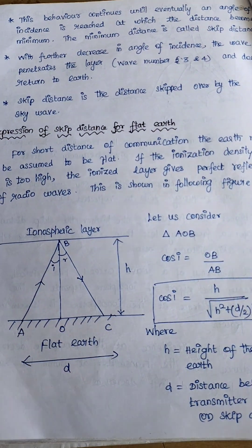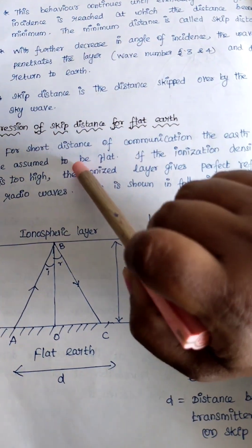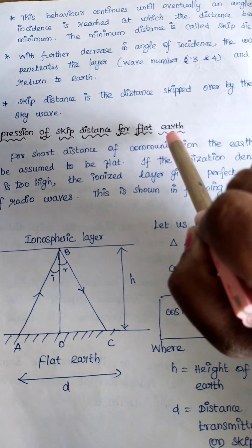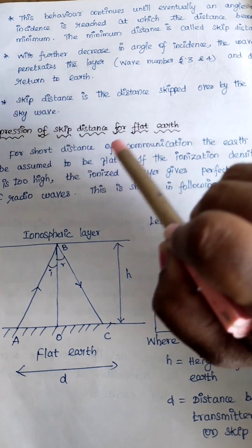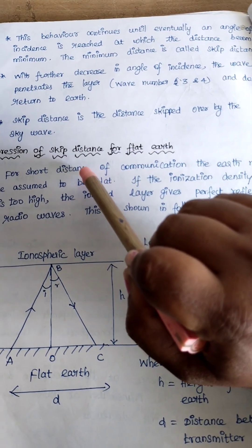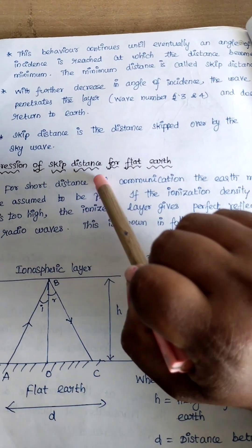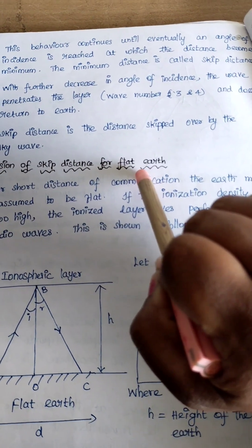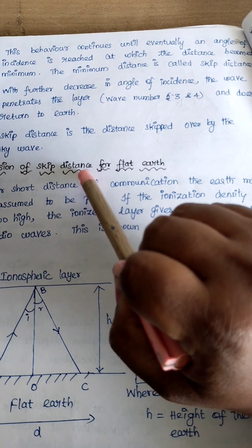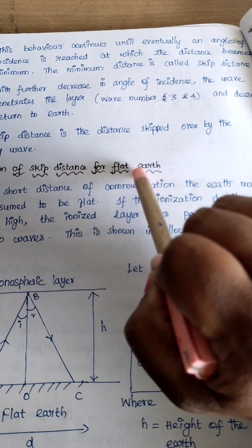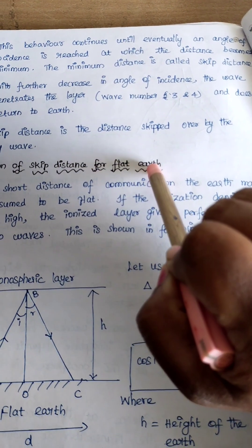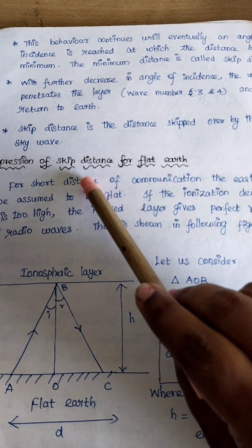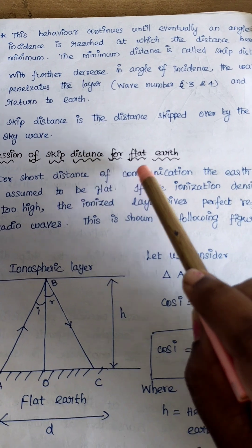Good morning students. Today we are going to see the derivation for skip distance for the flat earth. In the previous video I told what is skip distance. Now in this video we are going to derive the expression for skip distance for the flat surface. You can calculate the skip distance for two cases: one if it is a flat earth and another if it is a curved surface. In this first case we are going to derive the expression for the flat earth.